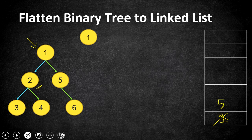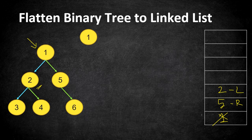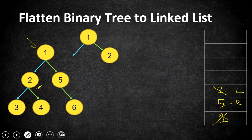We push the right node first and then the left node — so we push 5 first and then 2. Now 2 is at the top of the stack. We pop 2, add it to our linked list (making node 1's right child point to 2 and its left child null), and then explore 2's children which are 3 and 4. We push 4 first and then 3, so 3 is now at the top.